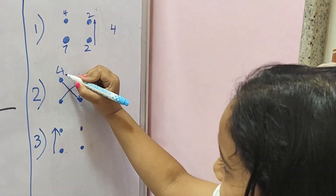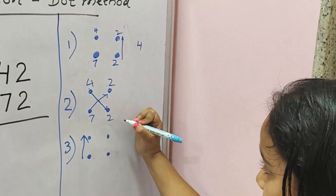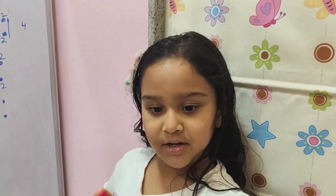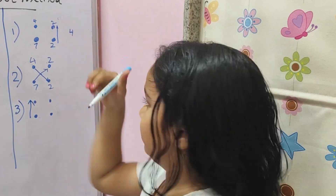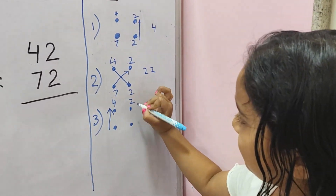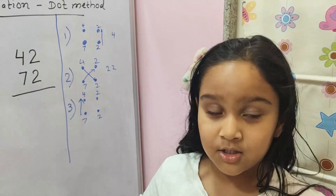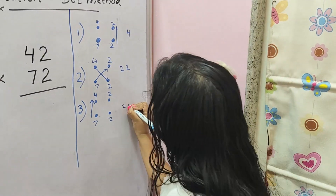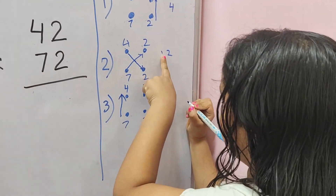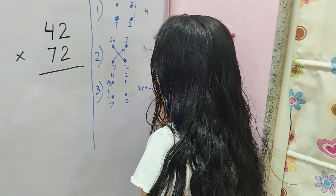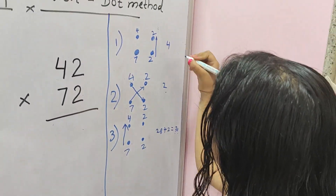Now again we write 42 and 72. The cross multiplication: 2 times 4 is 8, plus 7 times 2 is 14, which gives us 22. So there is a carry forward. The next step: we write 42 and 72 again. The third step, which is the last step: 7 times 4 is 28, plus the carry forward 2 equals 30. So the answer is 3024.